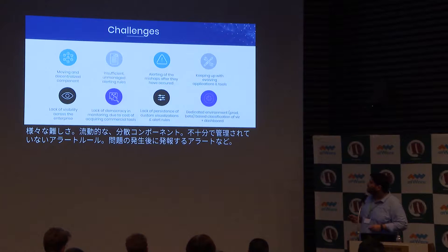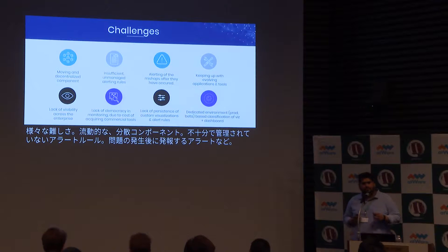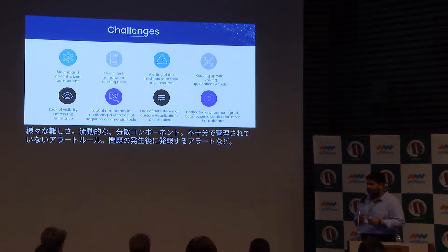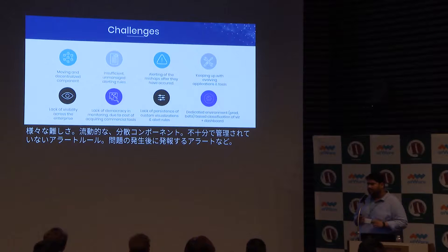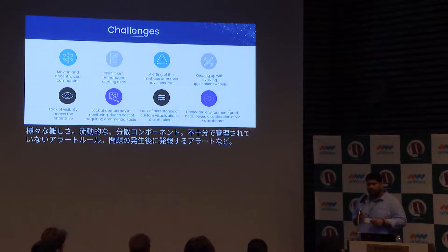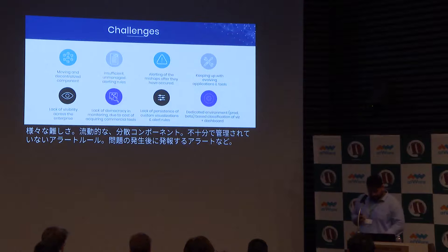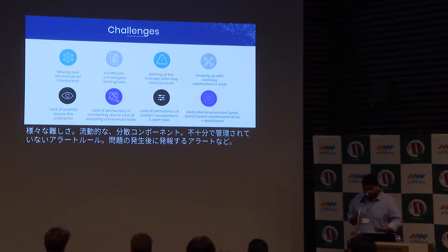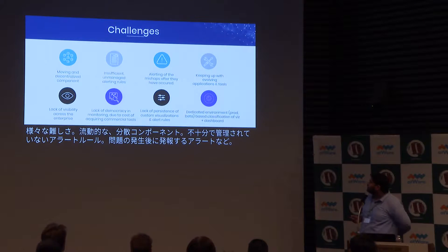Then there is insufficient, unmanaged alerting rules. Generally, after applying all these metrics and creating dashboards, the next important thing is to have intact alerting rules in place — and preferably those alerting rules should be provided by the fabricator of that particular tool as well, to ensure certain company standards for monitoring.